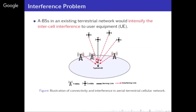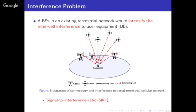Here is a typical scenario: there is a user, and there are four drones and three base stations on the ground. There are two kinds of services — one from the terrestrial BS (TBS) and the other from the Aerial BS (ABS). The ground-based ones are called TBS and the drone-based ones are called ABS.